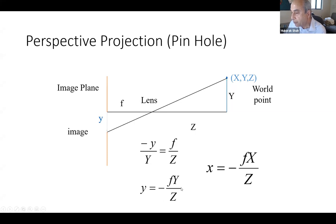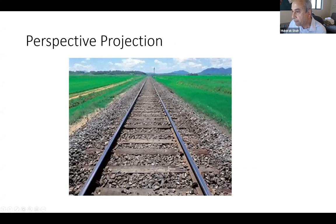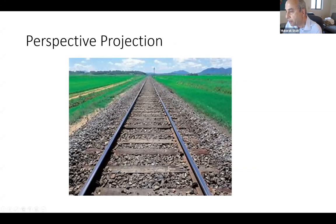If Z is large, then x and y will be small — that is a fact of life. Like a railway track: those two tracks are parallel, but when you look down the track the distance between them appears to reduce and they actually meet at infinity. That is the perspective projection — points far away have large Z, so their x and y coordinates are reduced.